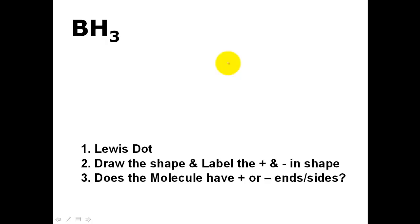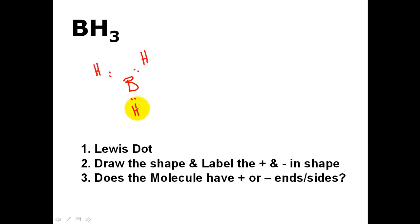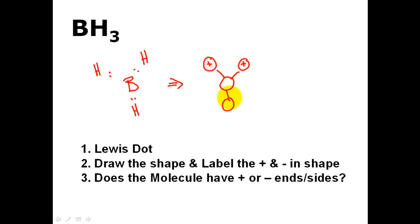The next example is BH3, boron trihydride. This is an exception to the Lewis dot structure where boron is only going to need six electrons to have a full outer shell — it's satisfied with six electrons. The shape is trigonal planar, not pyramidal. There are no unshared pairs of electrons, and every single perimeter atom happens to be a plus — all H's are positive. Because all the perimeter atoms are positive with no negatives, this is an example of a non-polar molecule.